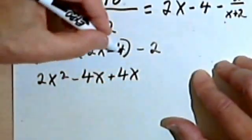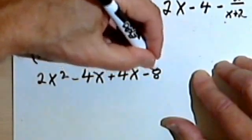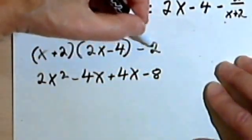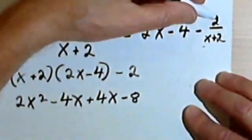Then I've got 2 times negative 4 is negative 8, and the negative 2 remainder for my answer.